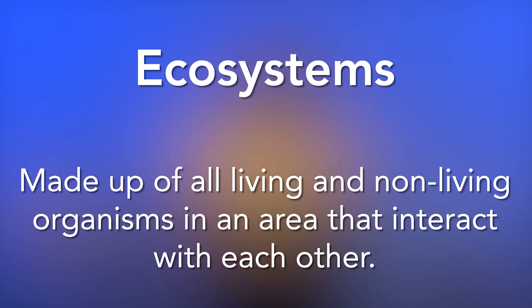Ecosystems are made up of all living and nonliving organisms in an area that interact or connect with each other, like the circle of life. Ecosystems consist of plants, animals, and other living things that make up communities of life in an area, as well as nonliving things such as the sun, soil, water, air, and weather. Ecosystems contain many different kinds of life, and they can be as small as a puddle or as large as the ocean. Each organism has its own role to play in an ecosystem.